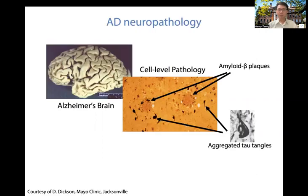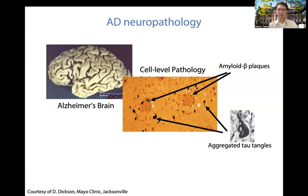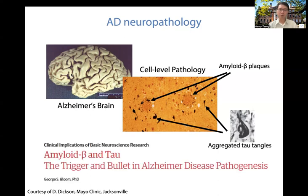As we all know, the two hallmark pathological features for AD are A-beta plaques and Tau tangles. It is still unclear how they interplay to lead to the disease. Recent evidence suggested that the relationship between A-beta and Tau in disease is like trigger and bullet — A-beta is likely to initiate the pathogenesis, but Tau is the toxic species to kill neurons. Therefore, in our lab, we study Tau as a therapeutic target for AD.